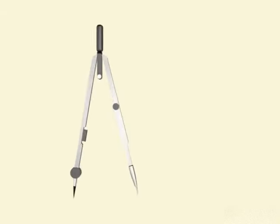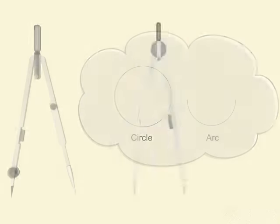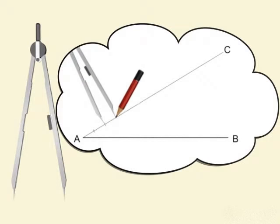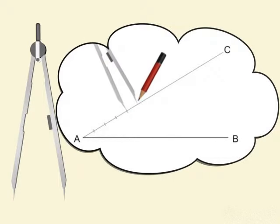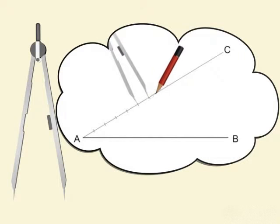As you already know, the compass is used for drawing circles and arcs. The divider is a little different, with both legs made of steel, and is used for transferring distances.